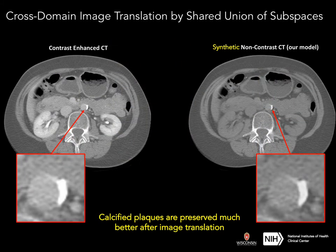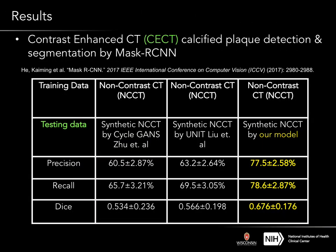The translated long contrast images by our model show that the small plaque structures are preserved much better. We also show quantitative results on cross-term plaque detection and segmentation using mass car ascending. Our model shows consistent improvement compared to the baseline model.